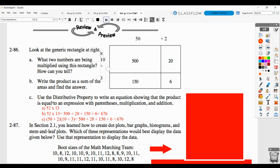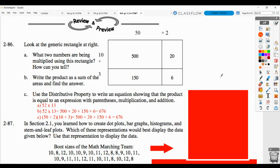And then now they want you to use the distributive property to write an equation that shows that the product is equal to an expression with parentheses, multiplication, and addition. So in other words, 50 plus 2 in parentheses times 10 plus 3. And the reason that this shows you the distributive property is because 50 times 10 gives you 500. And then 50 times 3 gives you the 150. 2 times 10 gives you the 20. And 2 times 3 gives you the 6.